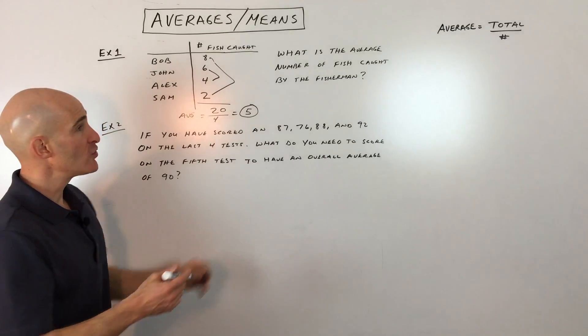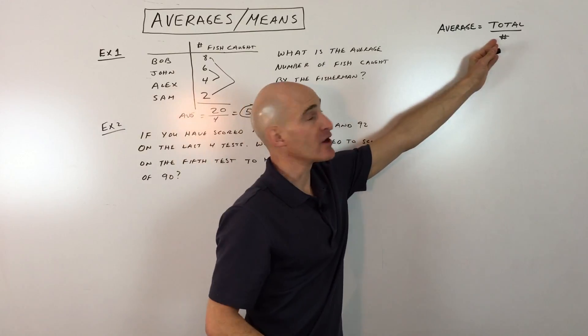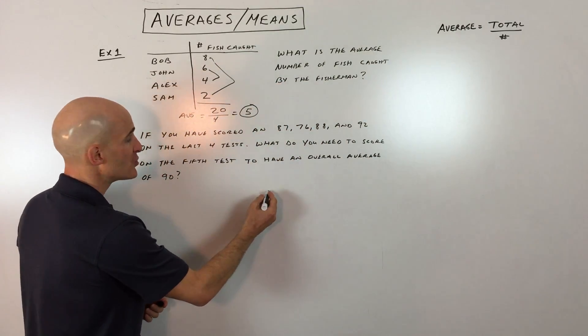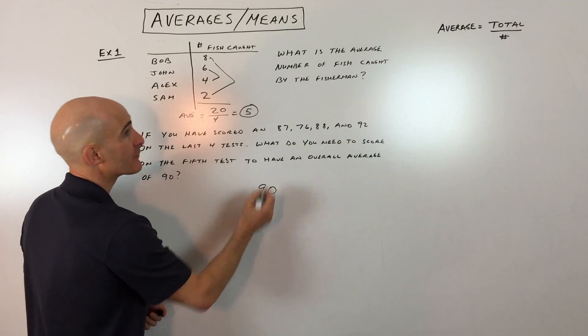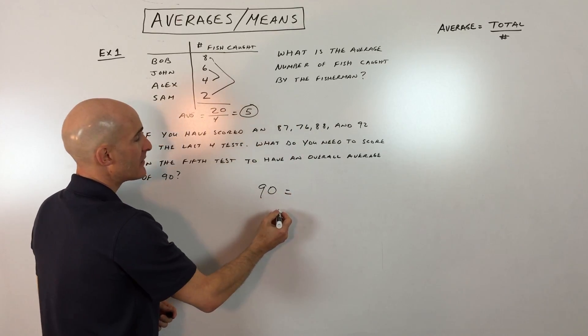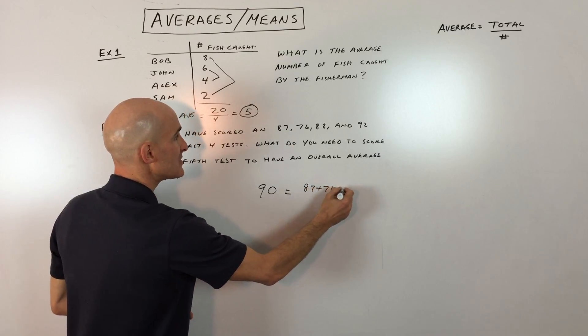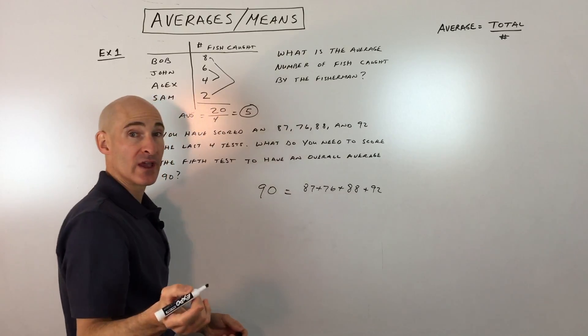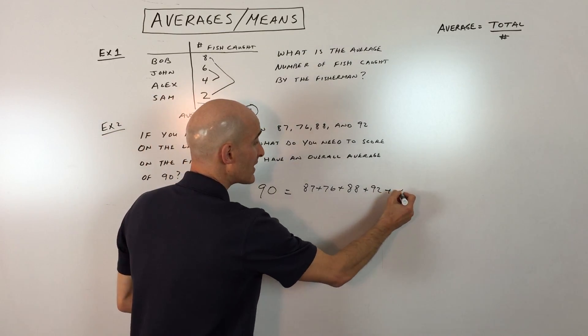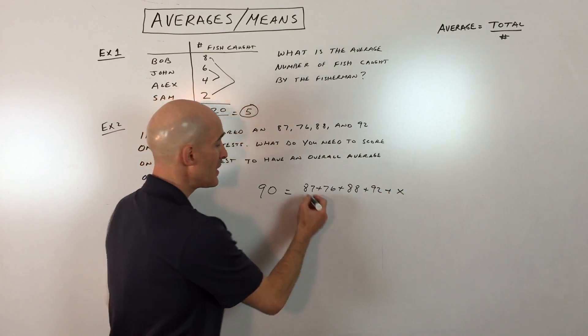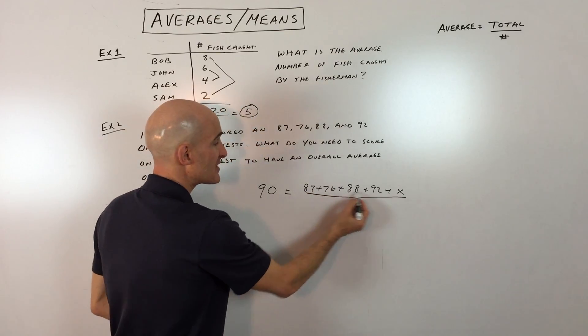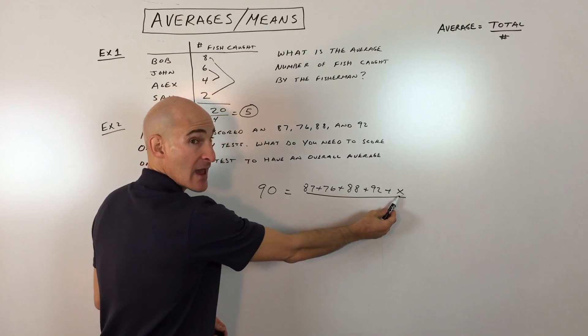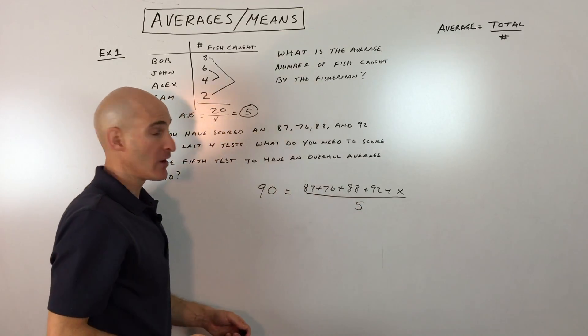Okay. So basically what you want to do here is we're still using this average formula. The average is the total divided by the number of tests. And in this case, your average that you want is 90. So let's put that in for the average: 90. And then the total is going to be 87 plus 76 plus 88 plus 92. Now the fifth test, we don't know what that is, so we're just going to call it X, the unknown, divided by the total of how many tests here. Now, some students will make the mistake of saying, well, there's four tests, but when we add on that fifth test, we have a total of five.